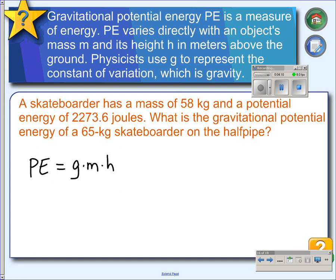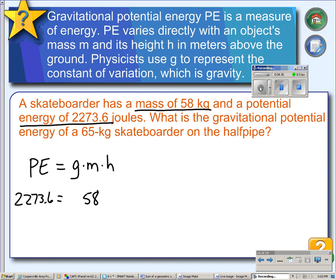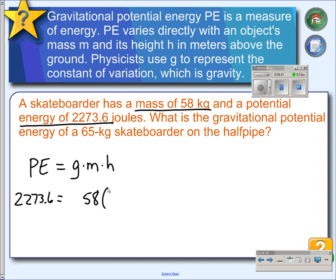A skateboarder has a mass of 58 kilograms and a potential energy of 2,273.6 joules. What is the gravitational potential energy of a 65-kilogram skateboarder on a half-pipe? The half-pipe, I neglected to put that in here, but the half-pipe is 4 meters high. The height here is 4, and we're calculating for G.